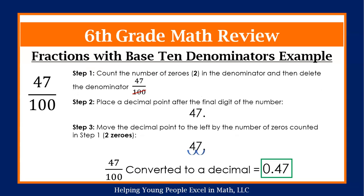We have as a fraction 47 over 100 and we want to convert that into a decimal. Our first step will be counting the number of zeros in the denominator. We have 1, 2, and then we are going to delete the denominator. All we will have left is our numerator, which is 47.